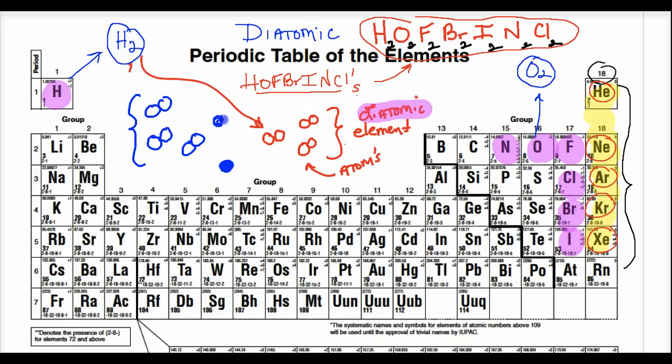And that's something to think about in your particle diagrams. But we have to know who our Hoffbrinkels are, who our diatomic elements are. And we should be aware of those elements that can only stay by themselves, which we call monoatomic.